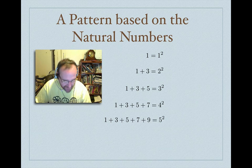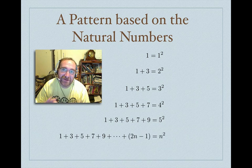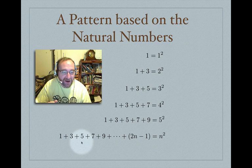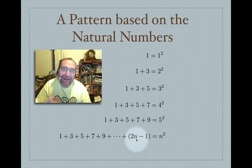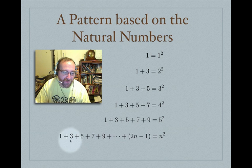It seems to be working, but this is not in itself a proof that it will always work. Maybe it only works for the first few hundred thousand billion and then stops. If you want to say this pattern continues forever, you need a proof that won't take forever to do. The formula for the nth odd number is 2n minus 1. For example, the tenth odd number is 2 times 10 minus 1, which is 19.